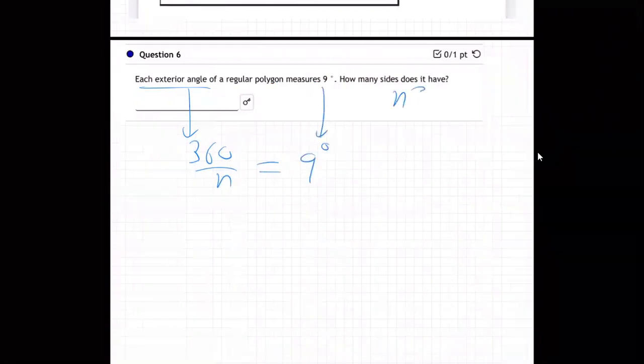How many sides, what is n, in other words? So we just need to solve that little equation for n. So how do we do it? You put this over one, you go diagonal, diagonal, cross multiply. So 360 times one equals nine times n.